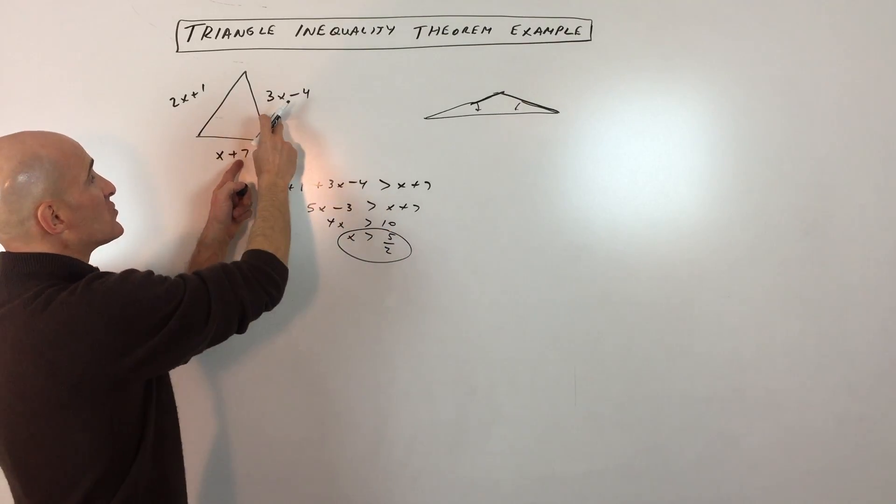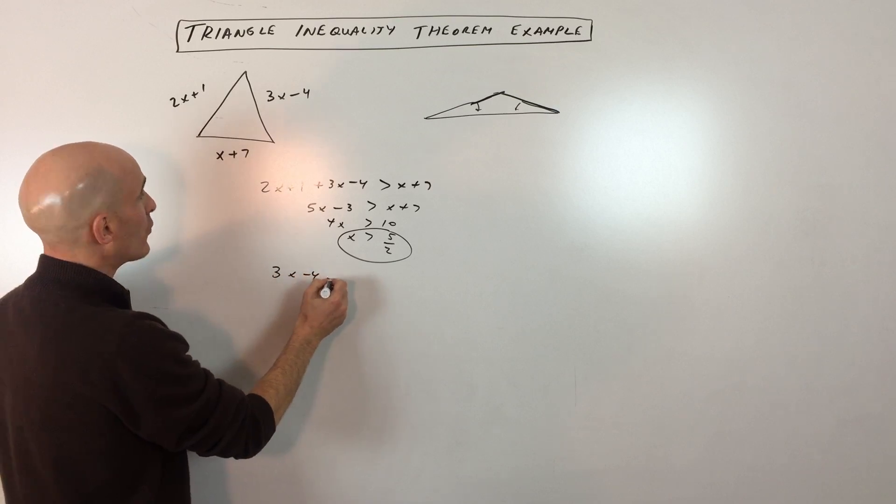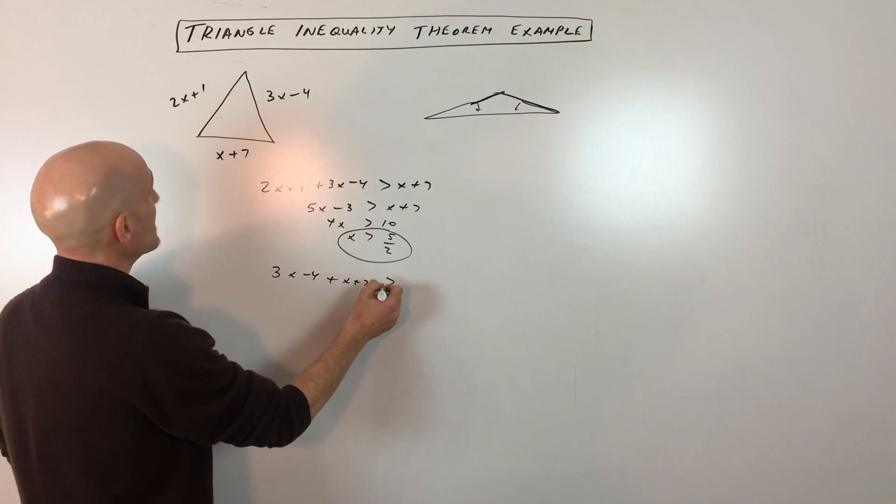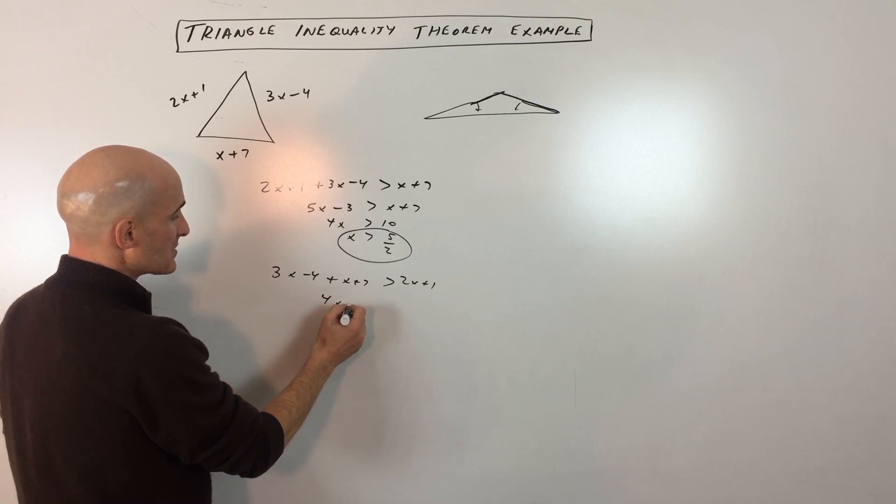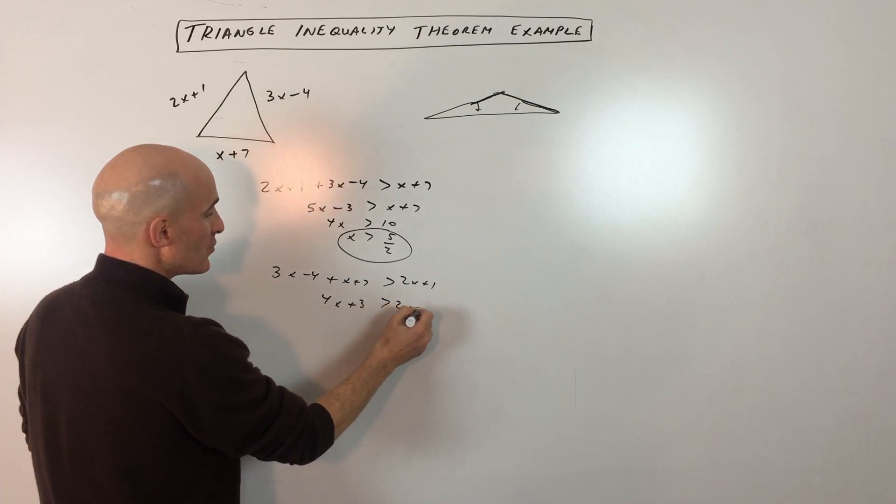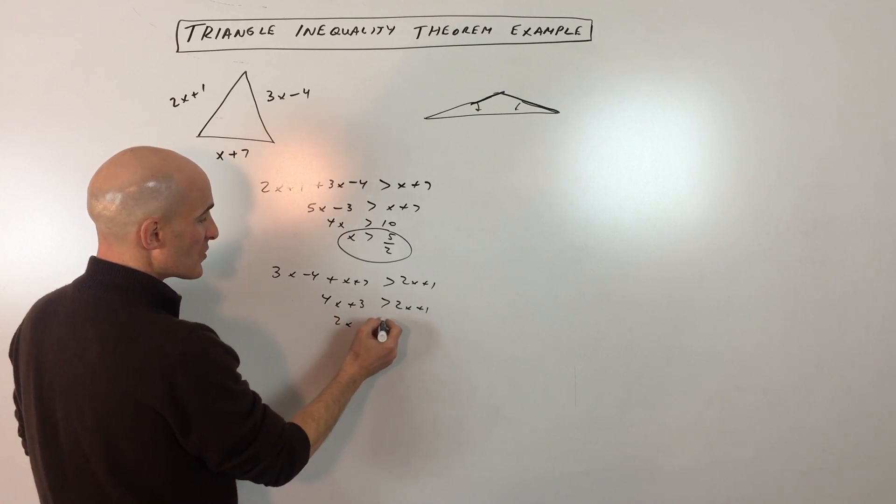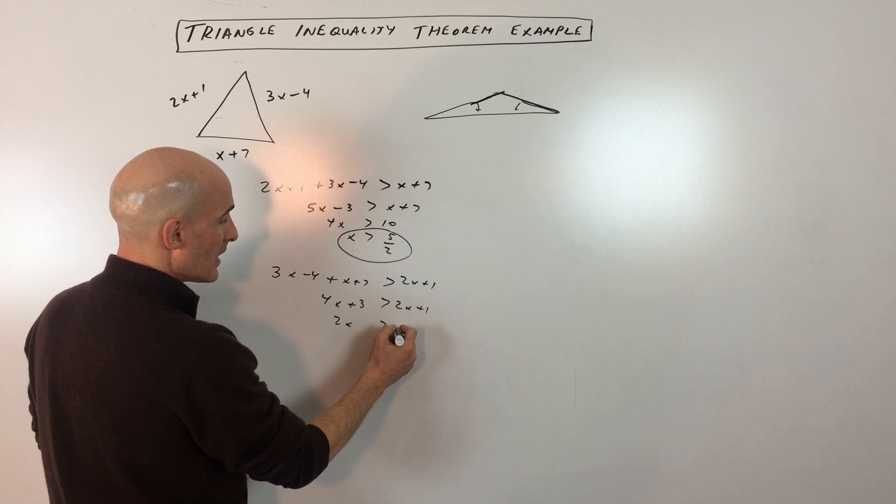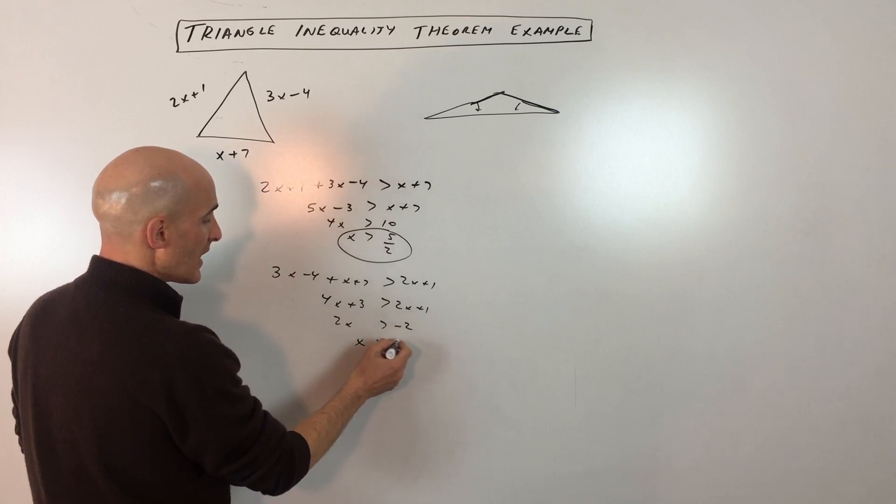Now let's use these two sides. They have to be greater than that third side. So we have 3x minus 4 plus x plus 7 has to be greater than 2x plus 1. This gives us 4x plus 3 is greater than 2x plus 1. If we subtract 2x from both sides, we get 2x. If we subtract 3 from both sides, we get negative 2. And if we divide by 2, x has to be greater than negative 1.